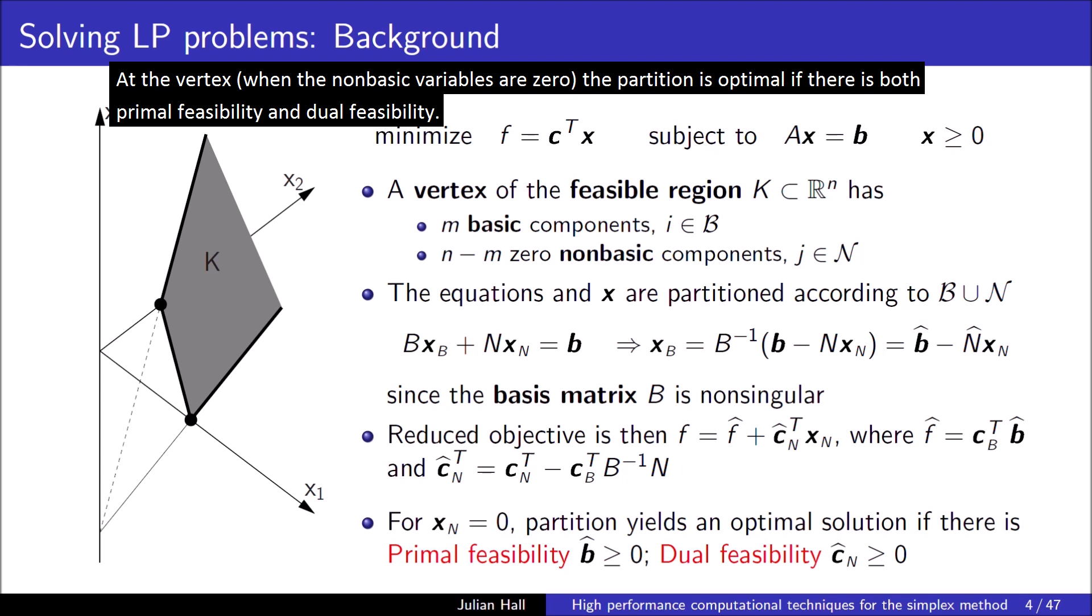At the vertex, when the non-basic variables are zero, the partition is optimal if there is both primal feasibility and dual feasibility.